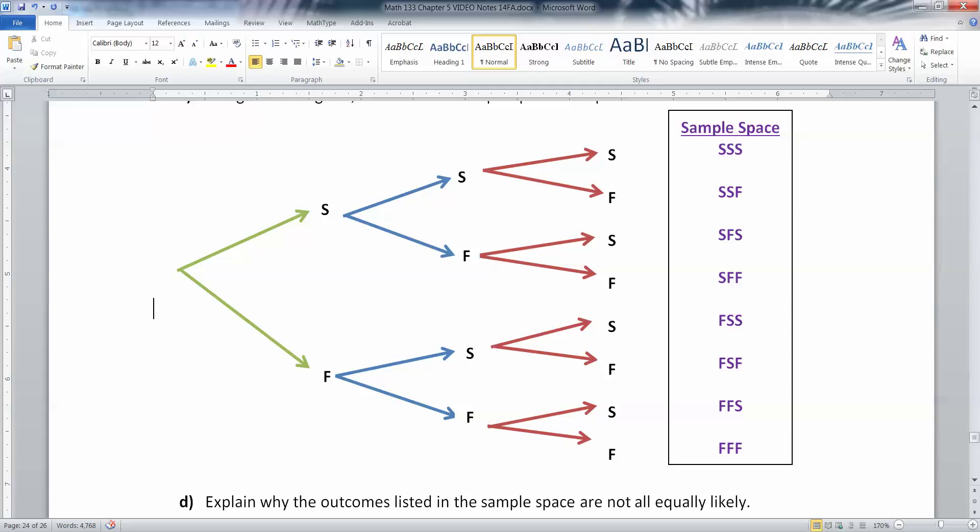So that means our options are succeed, succeed, succeed. That's S, S, S. Or succeed, succeed, fail. That's S, S, F. Then succeed, fail, succeed, and so on, all the way down until fail, fail, fail at the very bottom. So there are your options.